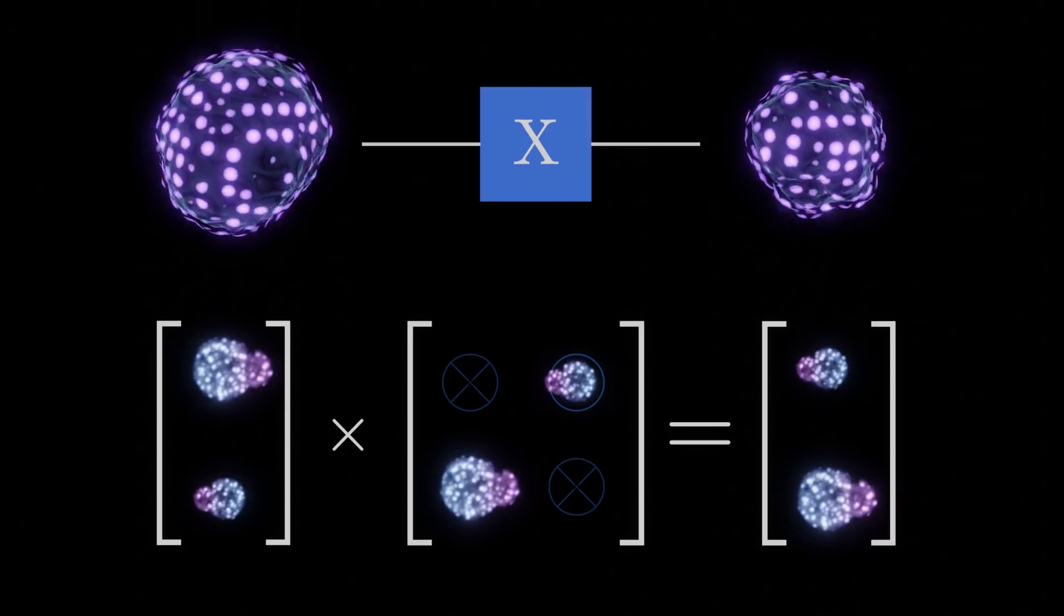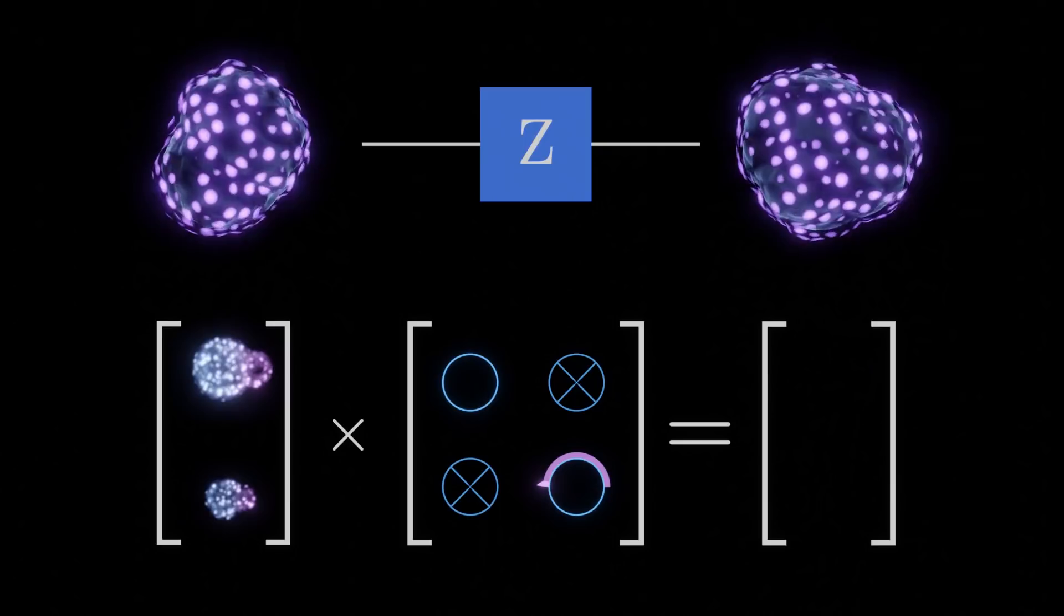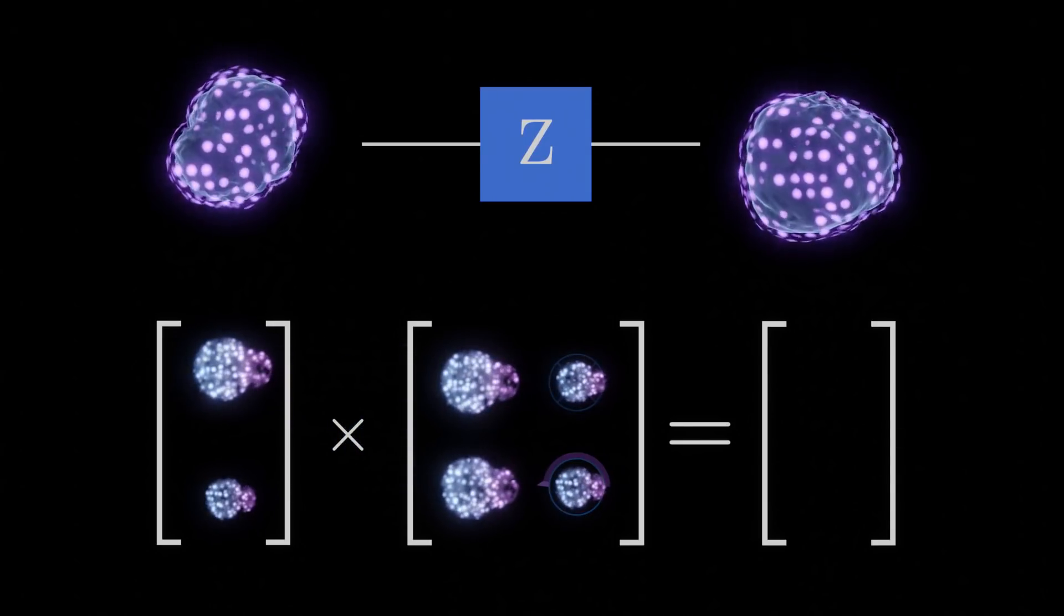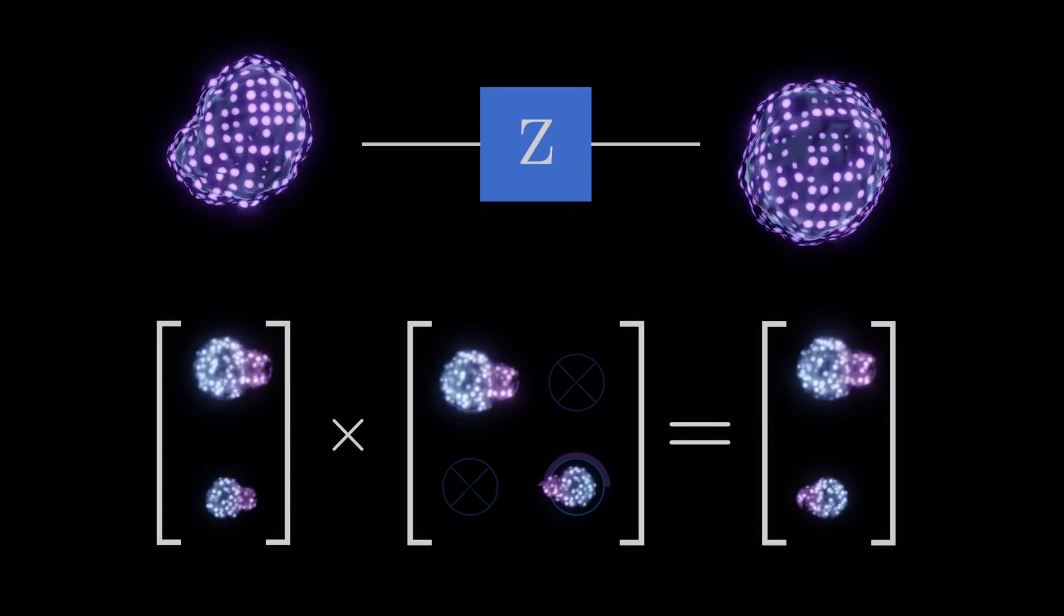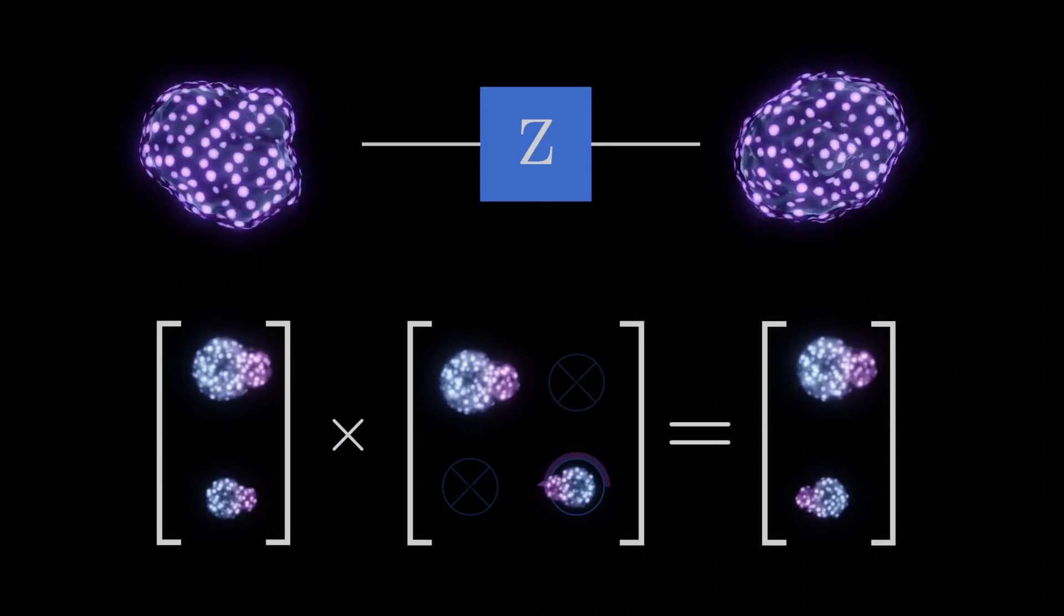One gate which has no parallel in classical computing is the Z gate. It effectively rotates the phase of the 1 state by pi radians. This is not particularly useful by itself, but it will form an integral part of our algorithm.